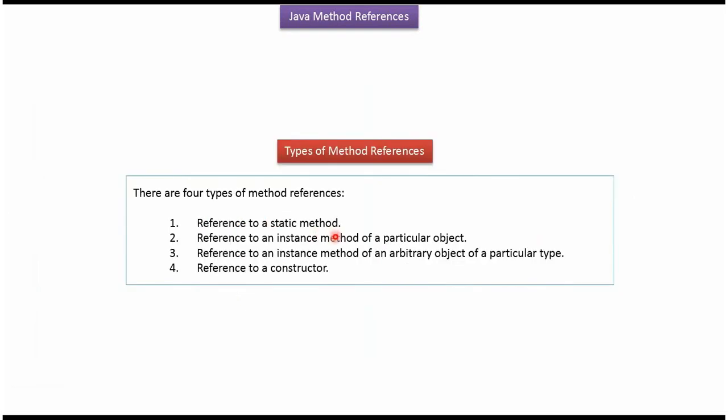Here you can see the types of method reference. First one is reference to a static method. Second one is reference to an instance method of a particular object. Third one is reference to an instance method of an arbitrary object of a particular type.